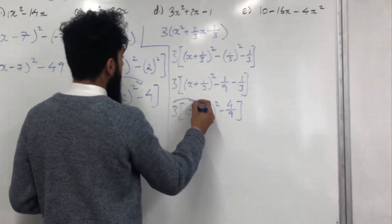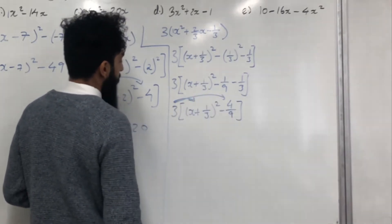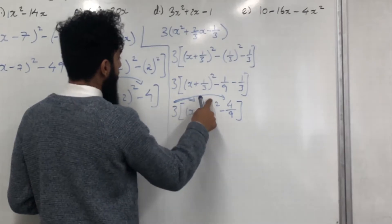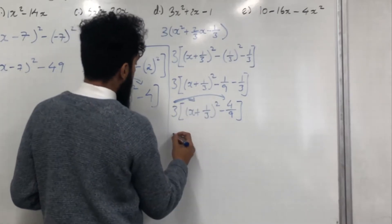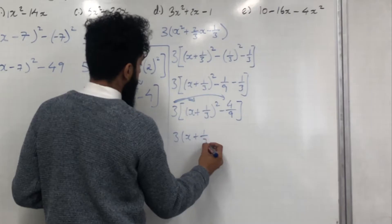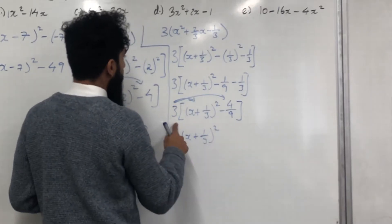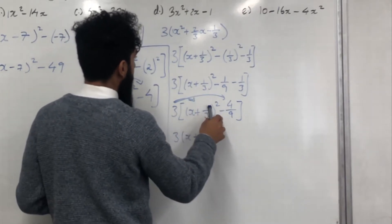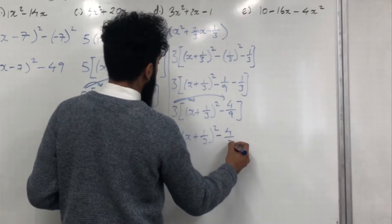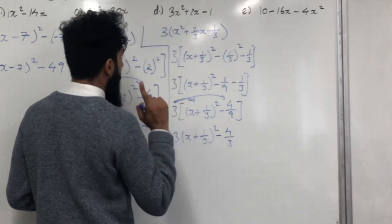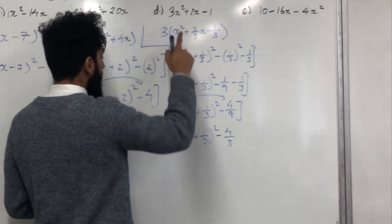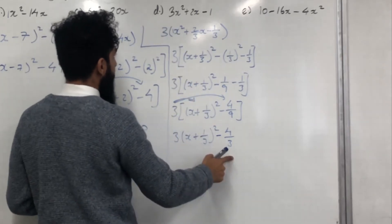Now we can expand. 3 multiplied by (x + 1/3)² is just 3(x + 1/3)². 3 multiplied by −4/9 is −4/3. So completing the square on 3x² + 2x − 1 gives 3(x + 1/3)² − 4/3.